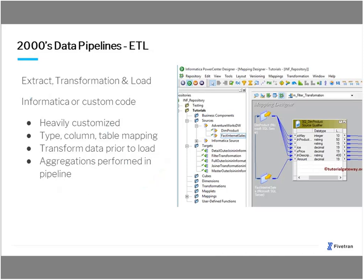In the 2000s, the data pipeline was really just extract, transform, and load — think Informatica or custom code, with heavily customized pipelines. You'd map the types, columns, and tables, transforming data prior to loading it into the OLAP cubes or the warehouse. All aggregations were also performed within the pipeline. It was a somewhat complex system, but it needed to be complex because all the sources being pulled from and loaded to were also extremely complex.